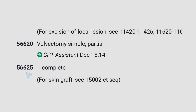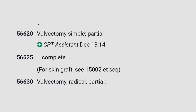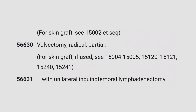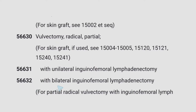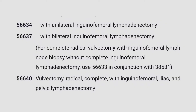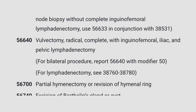56620 is the code for vulvectomy, simple partial. 56625 is for complete. 56630 is for vulvectomy radical partial. Then we have codes with unilateral inguino-femoral lymphadenectomy: 56632; with bilateral inguino-femoral lymphadenectomy: 56633. For vulvectomy radical complete: 56640 for vulvectomy radical complete with inguino-femoral, iliac, and pelvic lymphadenectomy.